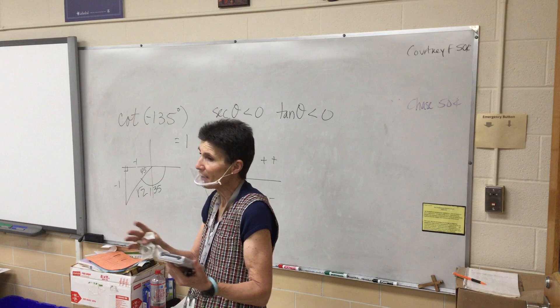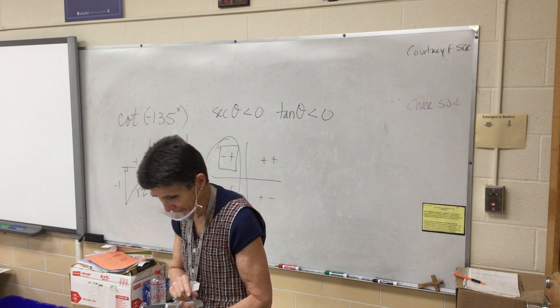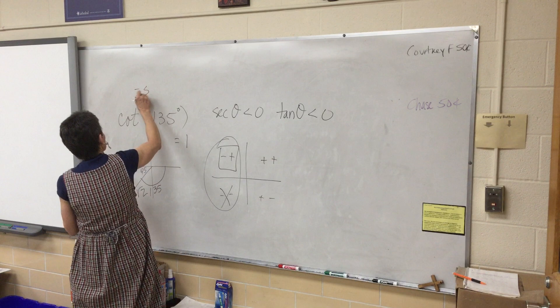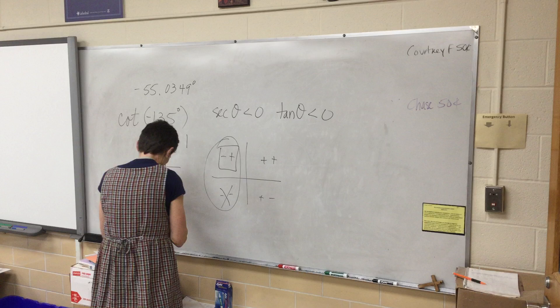I'm simply going to type exactly what is there. Second tangent, negative 1.43. Did you get negative 55.0349 degrees? That's it — that's all there is to it.